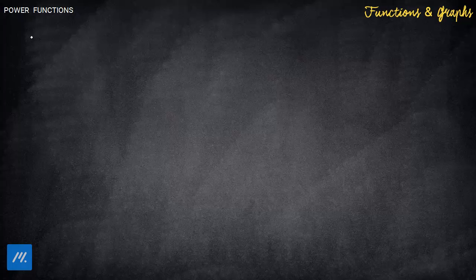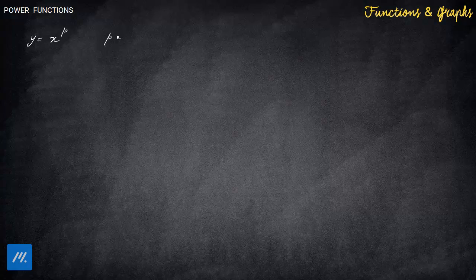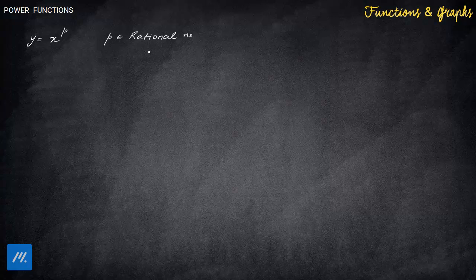Now let's take the case when y is equal to x raised to power p, where p is a rational number. The earlier case we took was where p was a natural number and we decided based on whether it was even or odd. Now p is a rational number, which means it will take the form m over n, and it could be positive or negative.